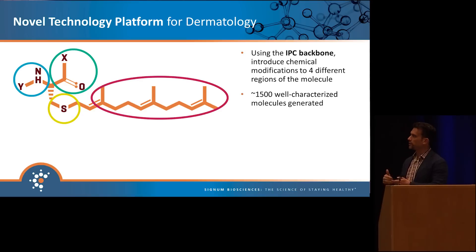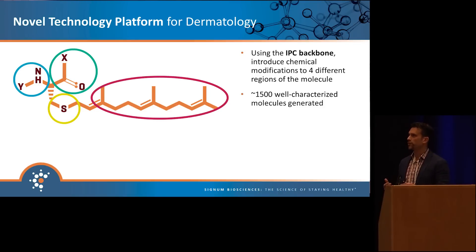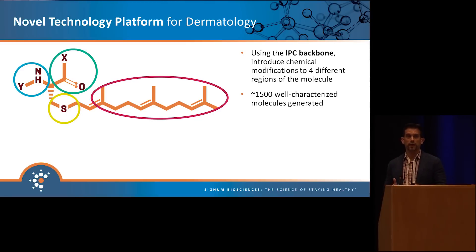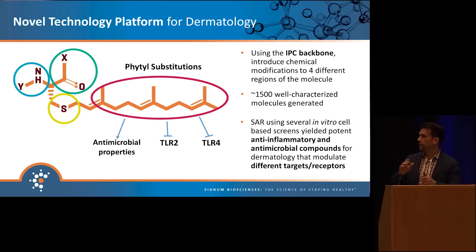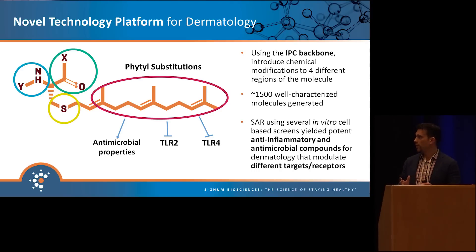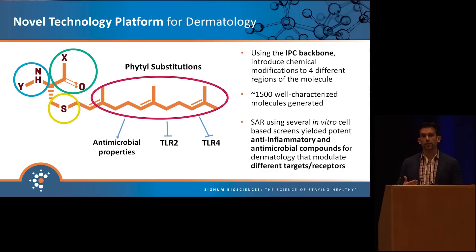We generated about 1,500 of these compounds and put them through a battery of in vitro and in vivo anti-inflammatory assays, screening for more potent anti-inflammatory compounds. Given that fatty acids are known to have antimicrobial properties, we were also hoping to uncover compounds with a dual effect — antimicrobial as well as anti-inflammatory. Through this large screening campaign, we found that introducing a phytol fatty acid tail, paired with specific modifications to the head group and carbonyl, generated dual-acting phytocysteine IPC compounds that could inhibit TLR2 and TLR4 signaling and had antimicrobial activity that previous farnesyl and geranylgeranyl IPCs didn't have.